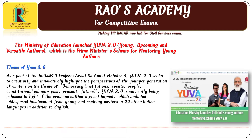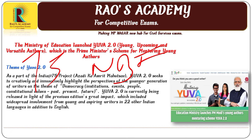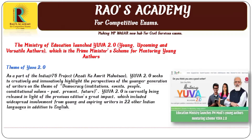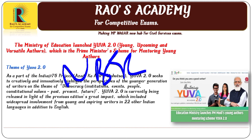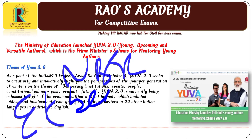YUVA 2.0 is being released in light of the previous edition's great impact, which saw widespread involvement from young and aspiring writers in 22 Indian languages in addition to English. This scheme is launched by the Department of Higher Education under the Ministry of Education, and the implementing agency is the National Book Trust of India. Under the scheme, 75 authors will be selected through an all-India contest. These young authors will be trained by eminent authors who will act as mentors. The first set of published books will be launched under mentorship, published by the National Book Trust of India, and translated into other Indian languages, ensuring the exchange of culture and literature, thereby promoting Ek Bharat Shrestha Bharat.